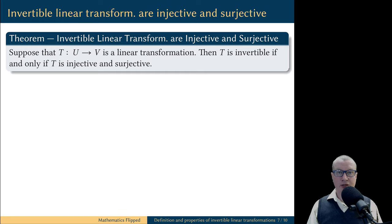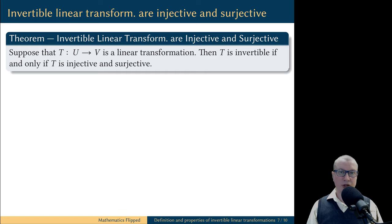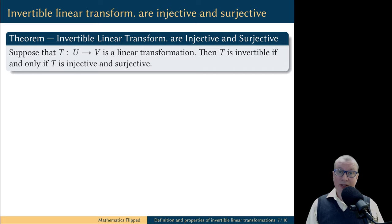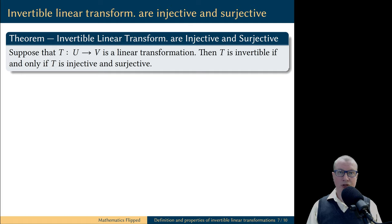There is a simple criterion: a linear transformation is invertible if and only if it is both injective and surjective. In fact, this is a general phenomenon — it is not specific to linear transformations. Any function is invertible if and only if it is both injective and surjective. But I am going to show the proof that relies on some special properties of linear transformations. This is an if and only if statement, so there are two implications to establish.